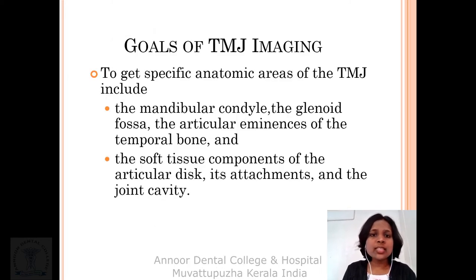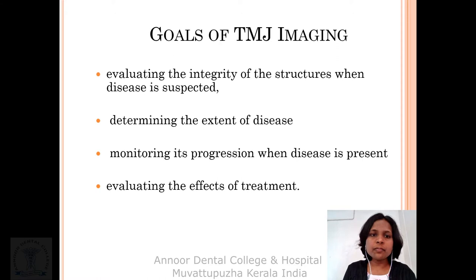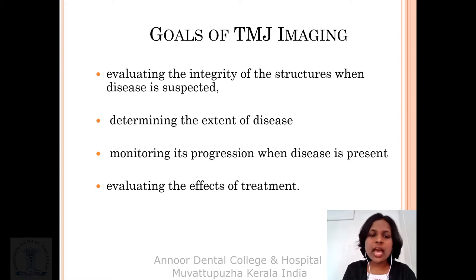Why do we need TMJ imaging? We need to get an idea about the specific anatomic areas of the TMJ such as mandibular condyle, glenoid fossa, articular eminence, and soft tissue components like articular disc, disc attachment, and the joint cavity. Other goals involve evaluating the integrity of structures when disease is present, determining the extent of disease, monitoring its progression, and evaluating the effects of treatment.